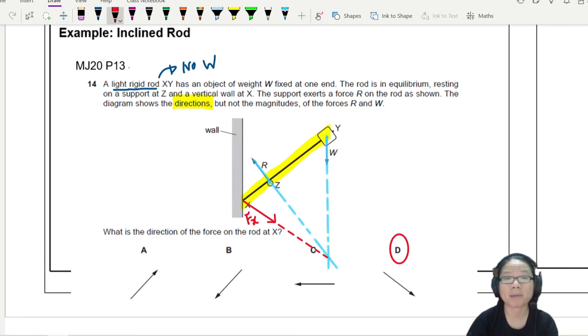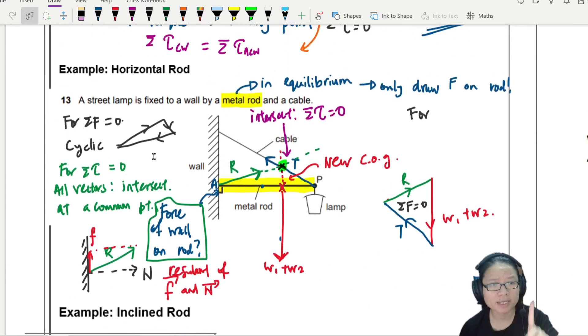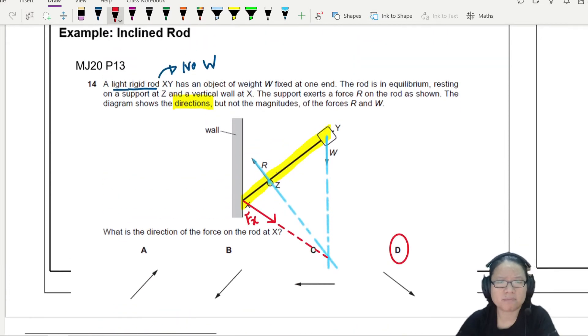Extrapolating helps - it makes answering this question easier compared to resolving, but resolving always works as well. One more thing I want to point out: this force of the wall on the rod is pointing diagonally downward, but this force of the wall on the rod is pointing diagonally upward.